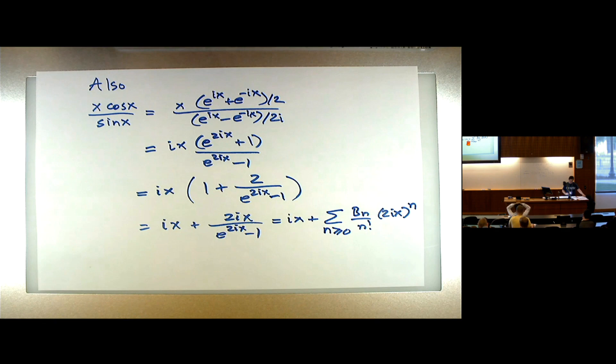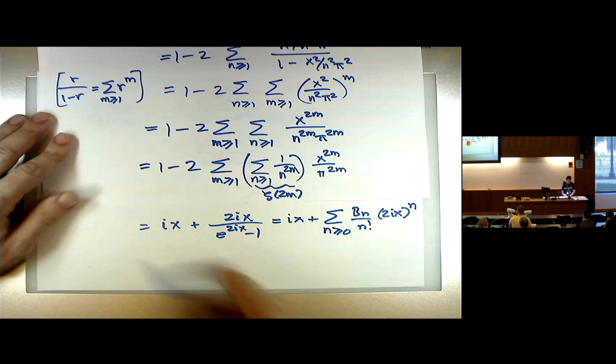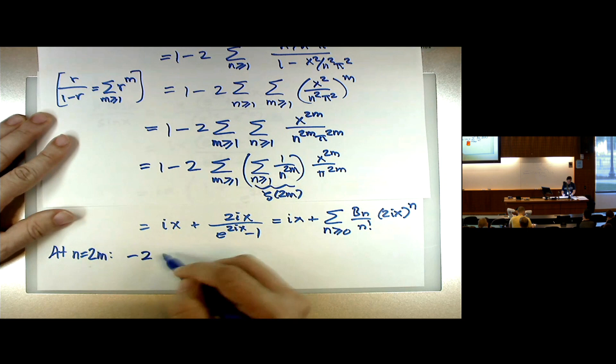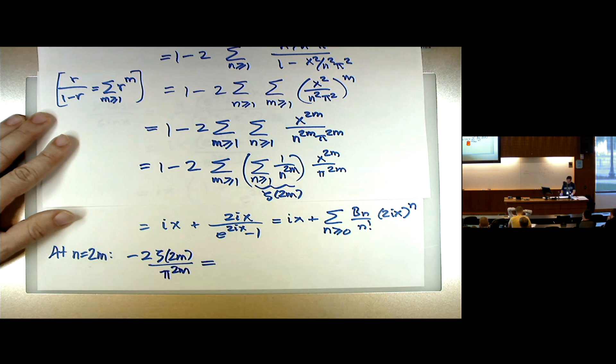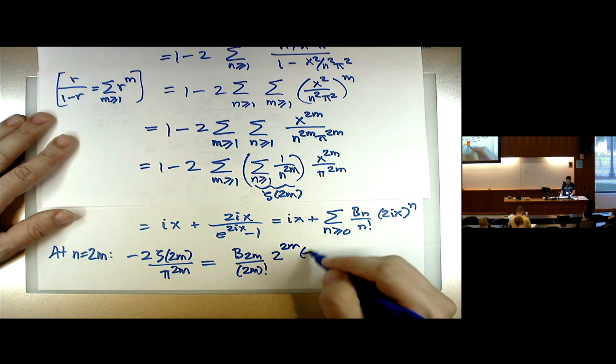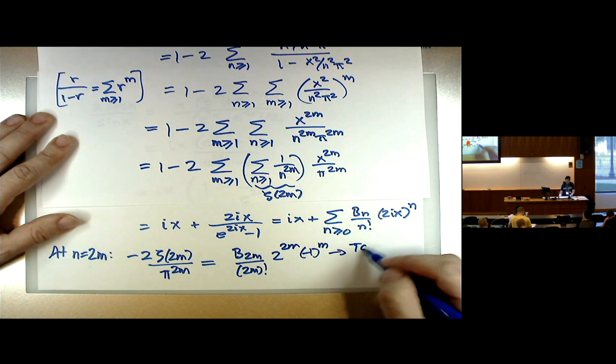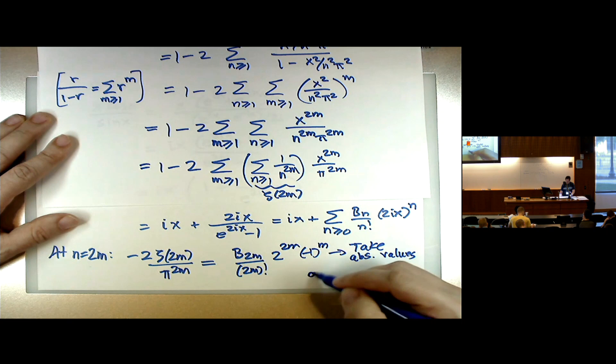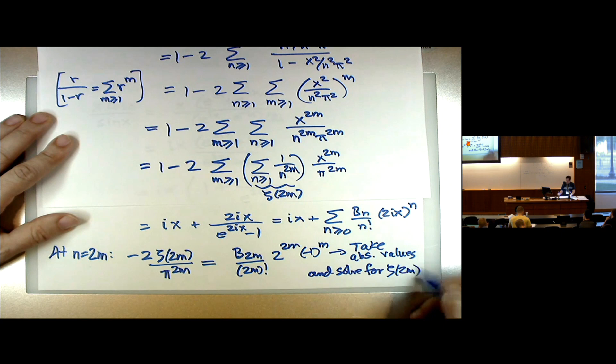So if we compare the coefficients: at n = 2m, you can read off −2·zeta(2m)/π^{2m} from one formula, and B_{2m}/(2m)! · 2^{2m} · i^{2m} = B_{2m}/(2m)! · 2^{2m} · (−1)^m from the other. Then you take absolute values to get rid of the signs, solve for zeta, and you recover Euler's formula.